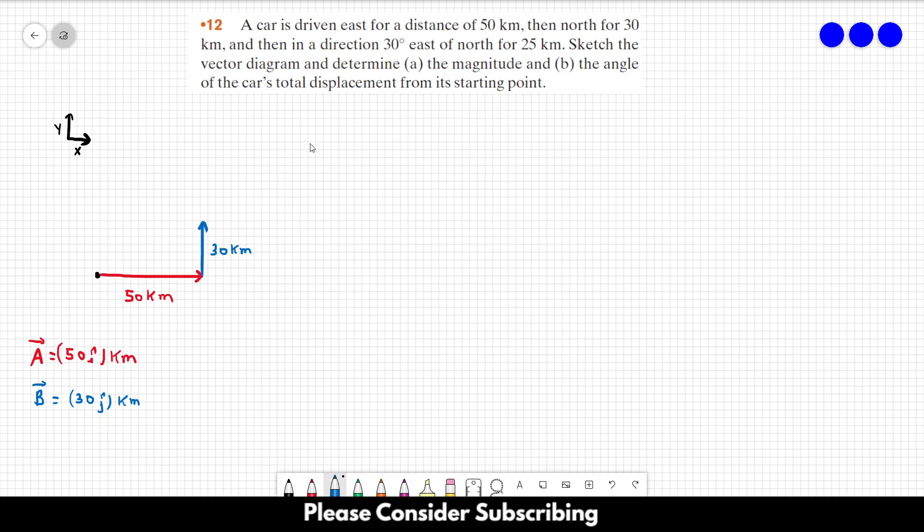And finally, 30 degrees east of north. So this is north over here. This is east over here. So the movement goes to this direction, making 30 degrees with the north direction. So we can see that we can easily see that this is 60 degrees, right?